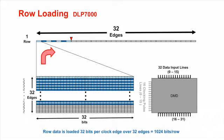The DLP 9500 1080p DMD also uses 16 full data clock cycles but has 64 parallel data input lines.